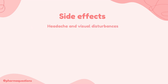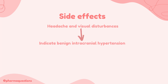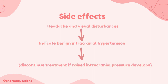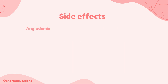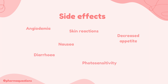Now let's take a look at some side effects. One of the most important side effects of tetracyclines is headaches and visual disturbances, as these effects indicate intracranial hypertension; if they occur, treatment is usually discontinued. Some other side effects include angioedema, skin reactions, decreased appetite, nausea, diarrhoea and photosensitivity reactions.